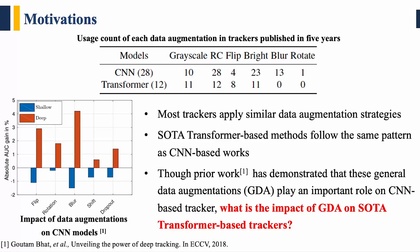Most tracking works focus on designing effective tracking frameworks with modern backbones, but neglect that appropriate data augmentation is the cheapest strategy to further boost tracking performance. In this paper, we notice that most trackers apply similar data augmentation strategies, which are combinations of random cropping and several image transformations. SOTA transformer methods also follow the same pattern as CNN-based works. Although prior work demonstrated that these general data augmentations play an important role in CNN-based trackers, the impact of general data augmentation (GDA) on SOTA transformer-based trackers remains unclear.